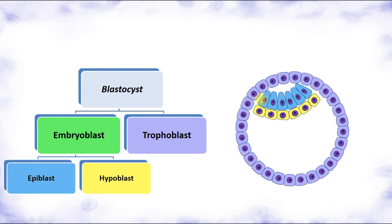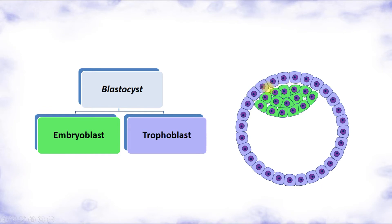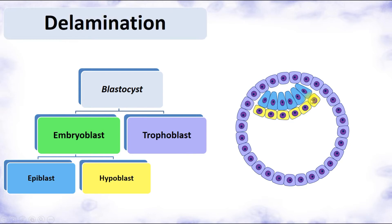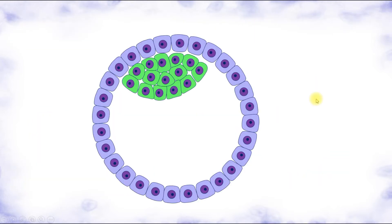What happens next is that the embryoblast — a common cell mass without divisions into different layers — is divided into two layers: epiblast and hypoblast. This process is called delamination, because the embryo's lamina (plate) is divided into two layers. This is the key process of early gastrulation.